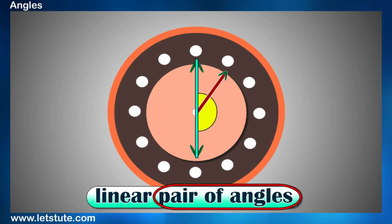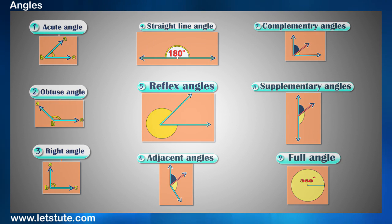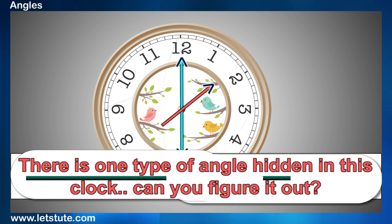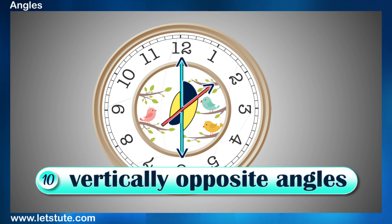Can you believe that till now we have learnt about nine different types of angles? Let's make a round figure by learning one more type of angle. Well, there is one more type of angle hidden in this clock. Can you figure it out? These angles are called as vertically opposite angles. And one of the interesting fact is that the vertically opposite angles are always equal.